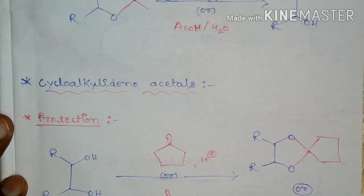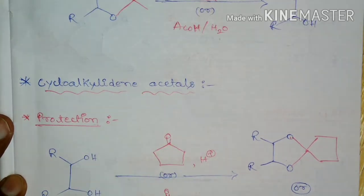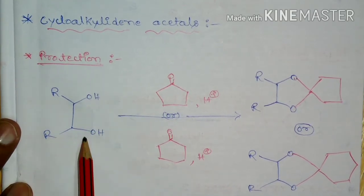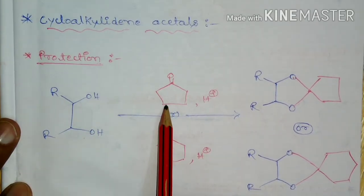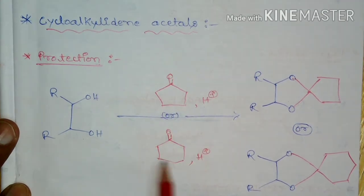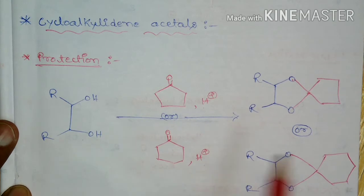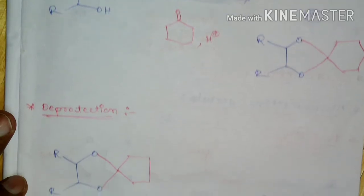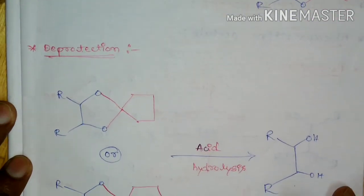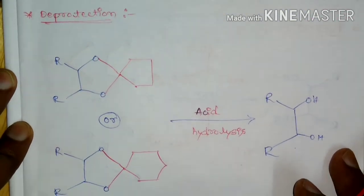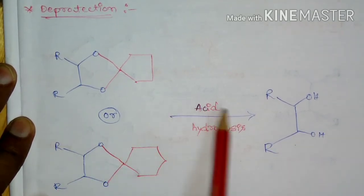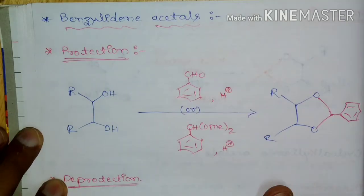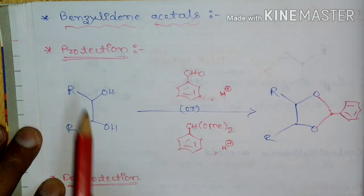1,2-diols can also be protected as cycloalkylidene acetals. Treatment of 1,2-diol with cyclopentanone or cyclohexanone in the presence of acid leads to the formation of cycloalkylidene acetals. These cycloalkylidene acetals can be deprotected by treatment with acid to give free 1,2-diols.